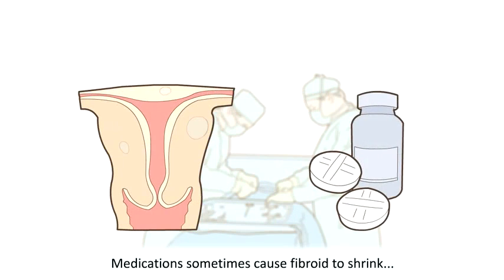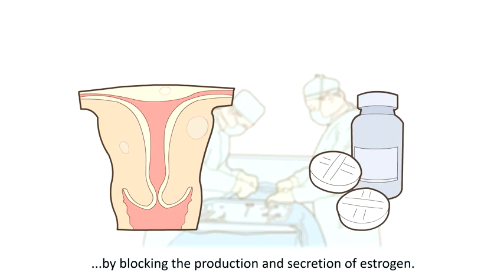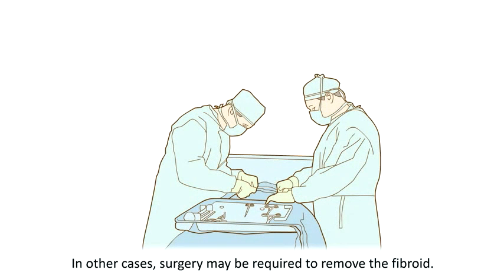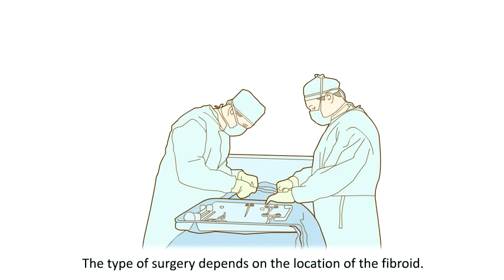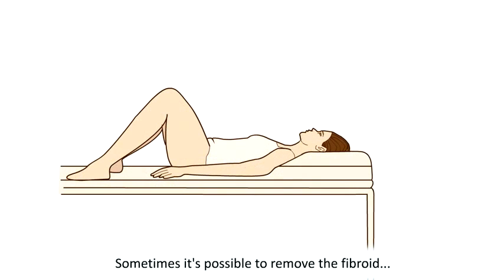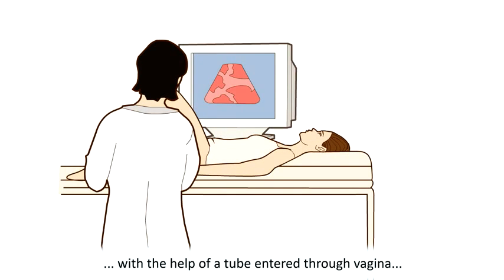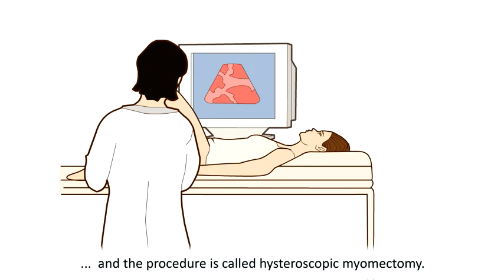Medications sometimes cause fibroids to shrink by blocking the production and secretion of oestrogen. In other cases, surgery may be required to remove the fibroid. The type of surgery depends on the location of the fibroid. Sometimes it's possible to remove the fibroid with the help of a tube entered through the vagina, and the procedure is called hysteroscopic myomectomy.